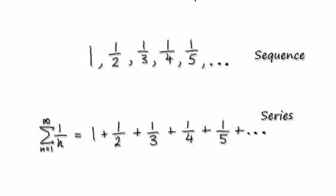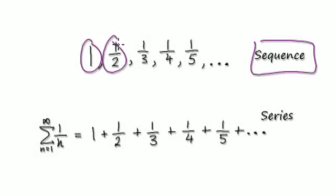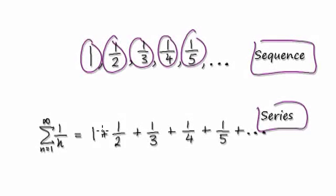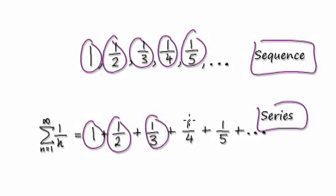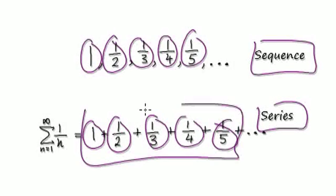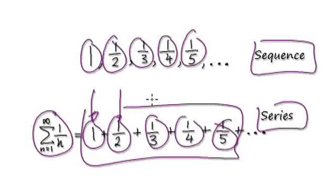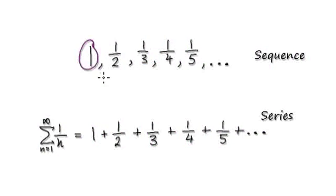Now we're going to move on to a new topic: sequences and series. A sequence is really a list of numbers — just a list of numbers. A series is when you start to add up all those numbers. So this here is an example of a series, because you're actually summing up all the terms. A sequence is a list of numbers separated by commas.